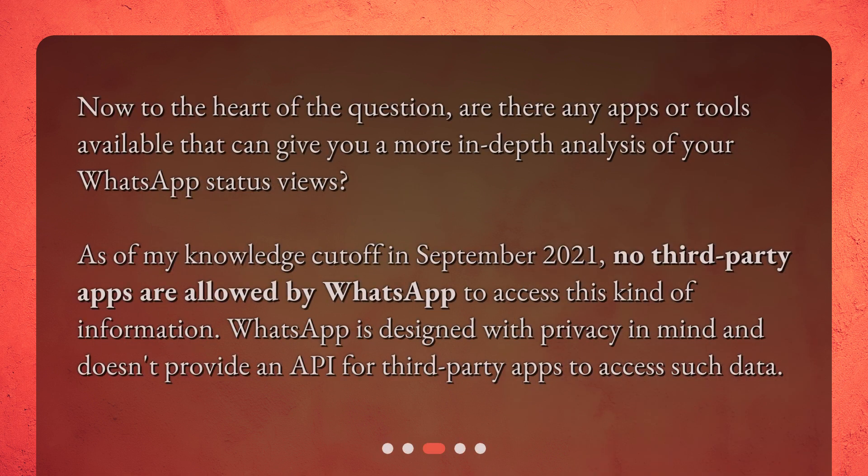Now to the heart of the question: are there any apps or tools available that can give you a more in-depth analysis of your WhatsApp status views? As of my knowledge cut-off in September 2021, no third-party apps are allowed by WhatsApp to access this kind of information. WhatsApp is designed with privacy in mind and doesn't provide an API for third-party apps to access such data.